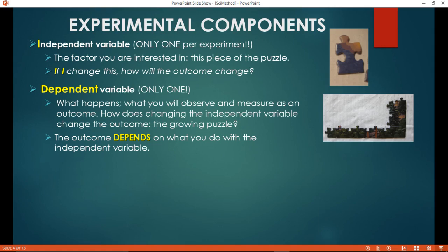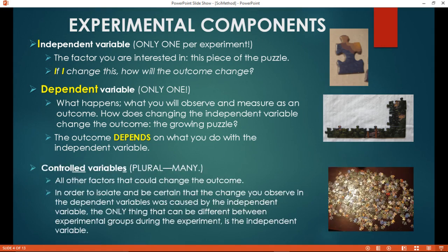To ensure this, all other variables, any other factor that could change the outcome, has to be controlled or held constant. Controlled variables. That's plural. There are many of them. Anything else that could change the outcome. So I'm only going to test one piece of the puzzle at a time, all from the same puzzle. Everything else remains the same.